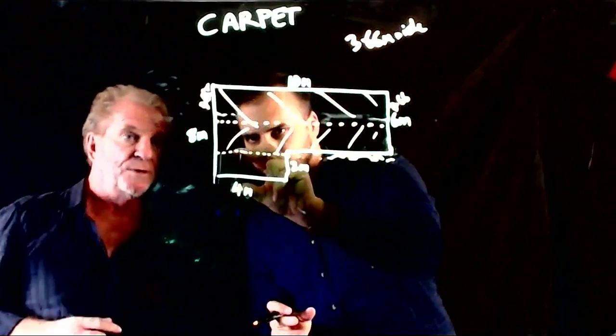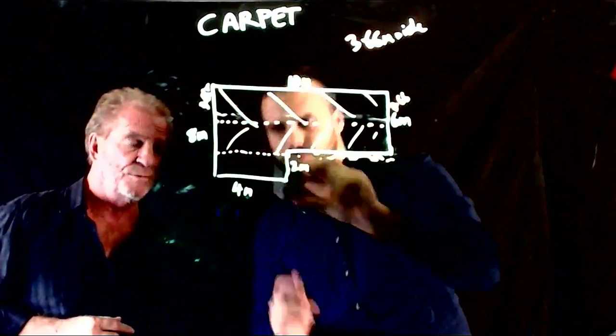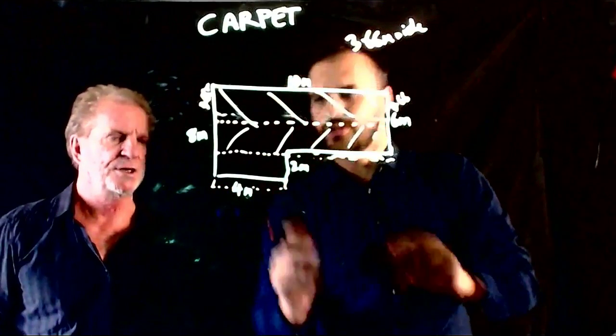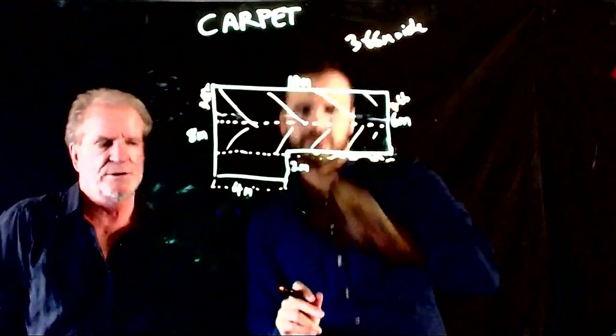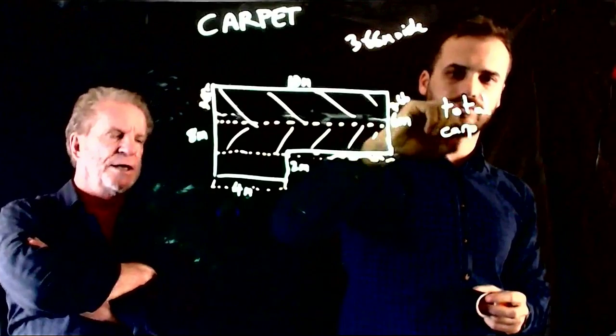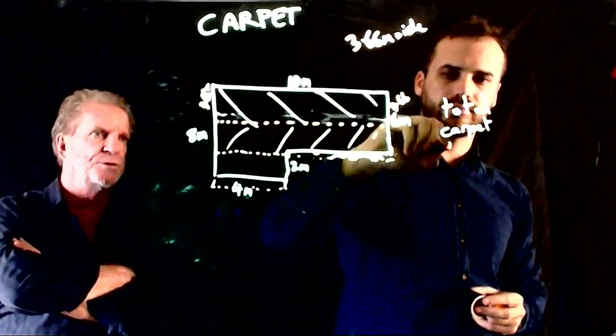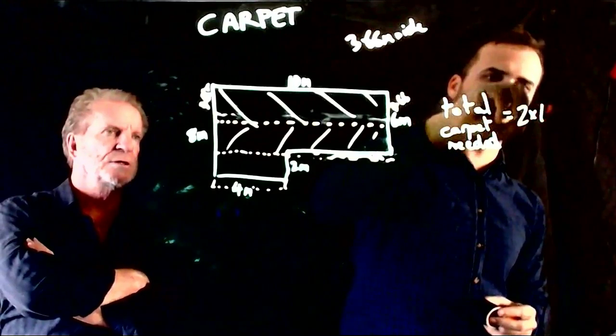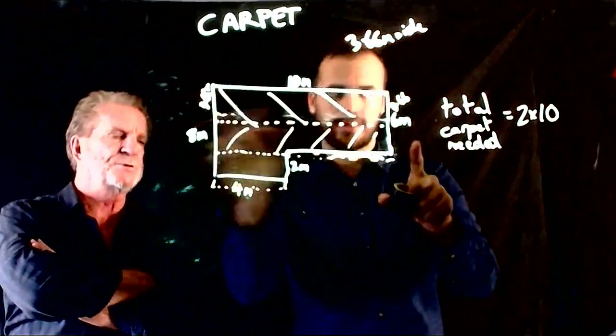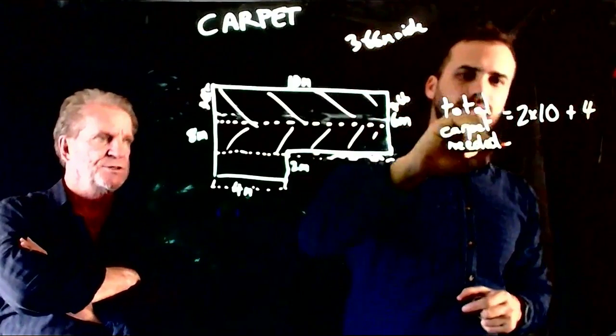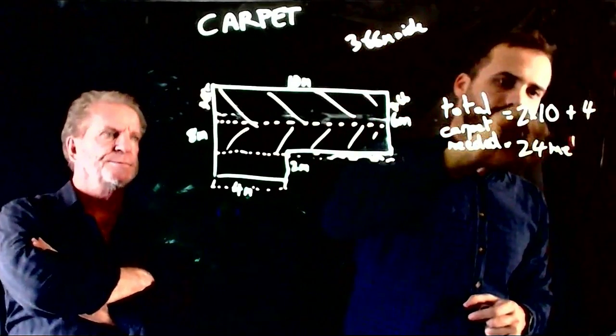Now we'll need a third strip, but it certainly won't go to 10 meters—it'll only go four meters. Again, we'll get a little bit extra for your doormat or whatever. So the total carpet required, total length, will be two times ten meters—two 10-meter strips—plus a 4-meter strip, which equals 24 meters.